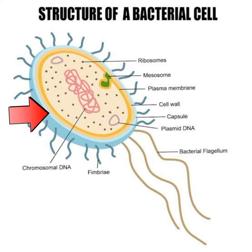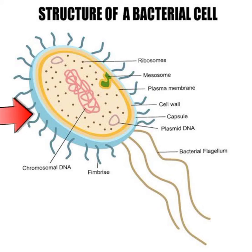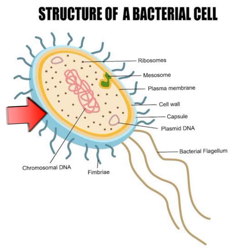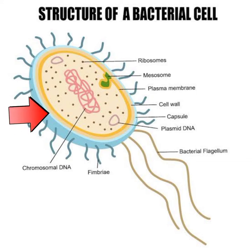Let's study in detail the structure of a bacterial cell. Some bacteria have an additional protective covering known as a capsule. It is made up of polysaccharides. This capsule protects the bacteria from drying out and also protects it from phagocytosis, which is the process of engulfing organisms. So bacteria is protected from other microorganisms due to this capsule.